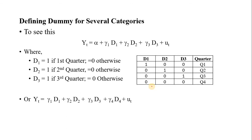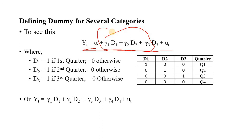To use the dummy variable technique here, we can specify an equation: Yt (sales) = γ1·D1 + γ2·D2 + γ3·D3 + error term. There are four quarters — Quarter 1, 2, 3, and 4 — but I am assigning only 3 dummies. I am following the m minus 1 rule: if there are m categories, we have to use m minus 1 dummies. Here there are 4 categories, so I use only 3 dummies.